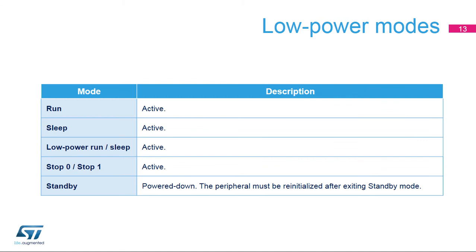The operational amplifiers are active in the following low-power modes: run, sleep, and stop modes. In standby mode, the op-amp is powered down and must be re-initialized for use if returning to one of the higher power modes.